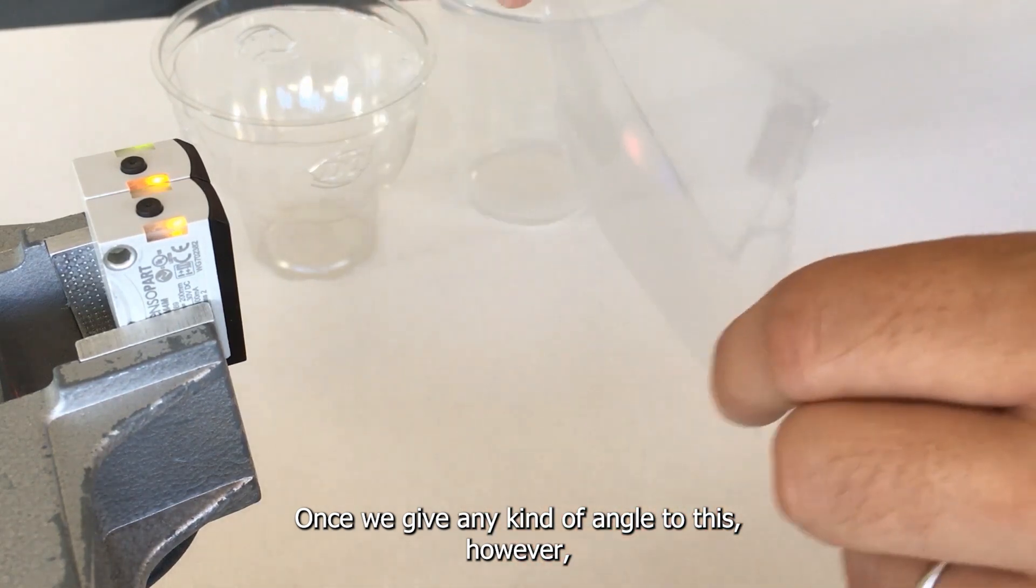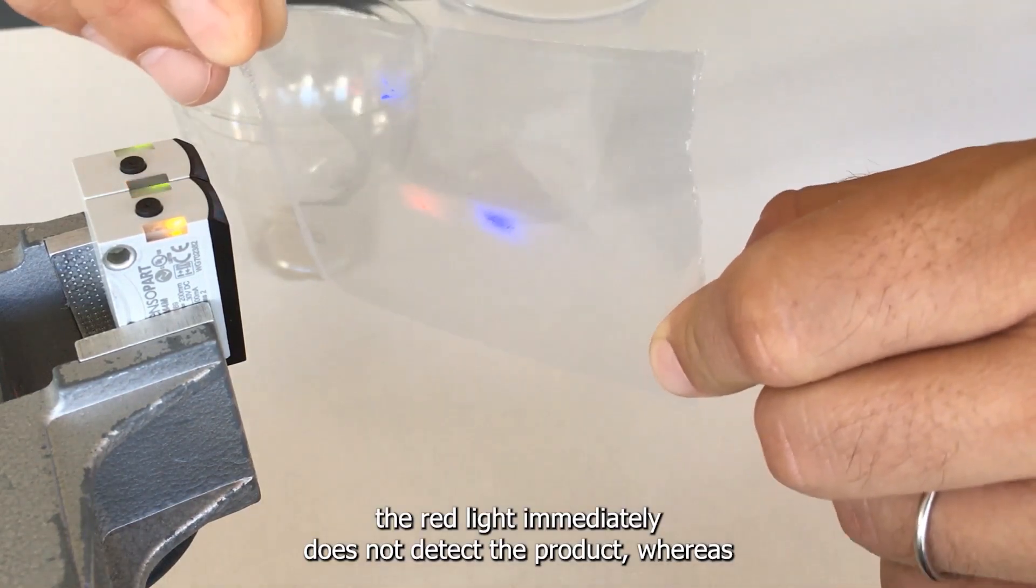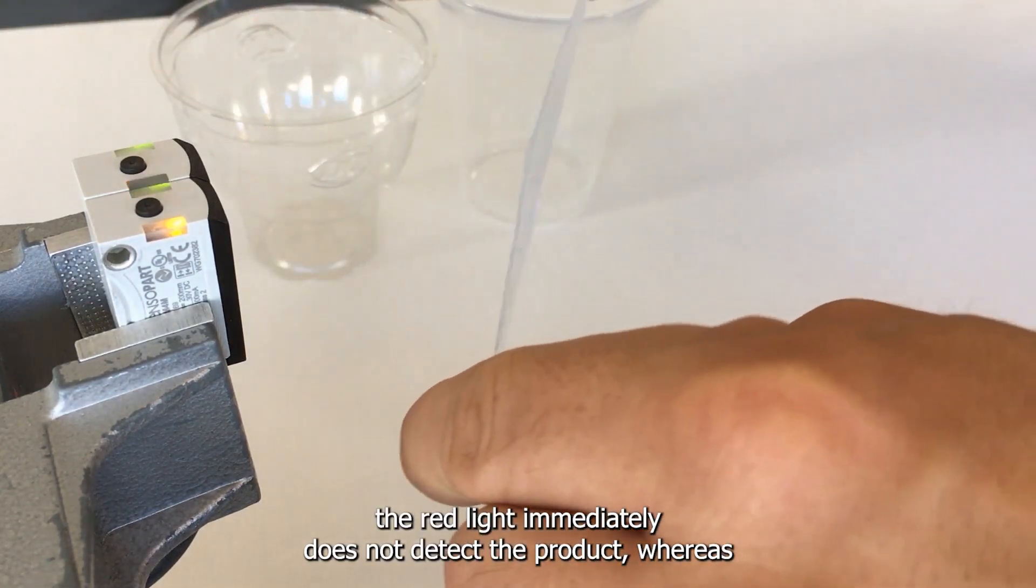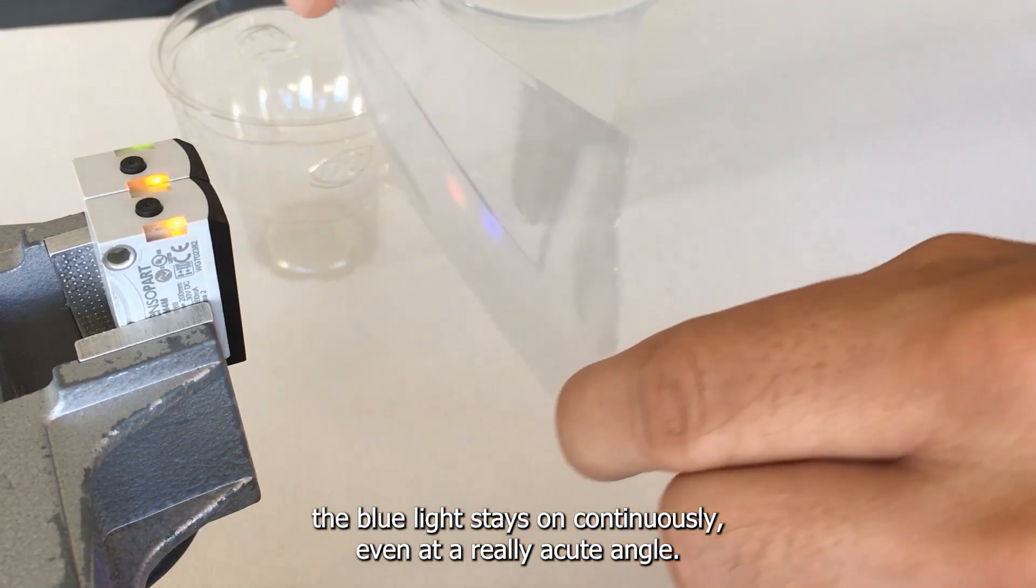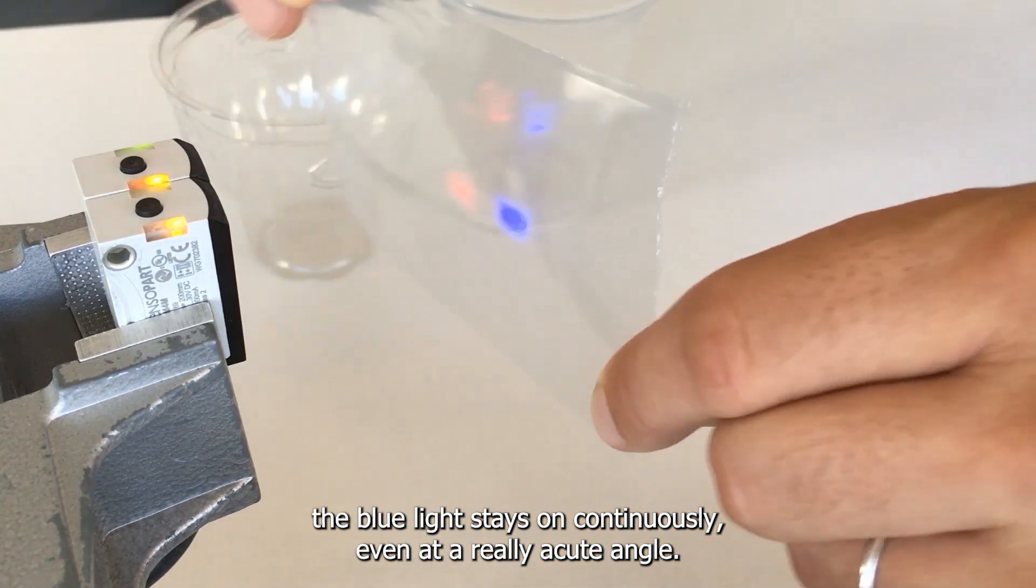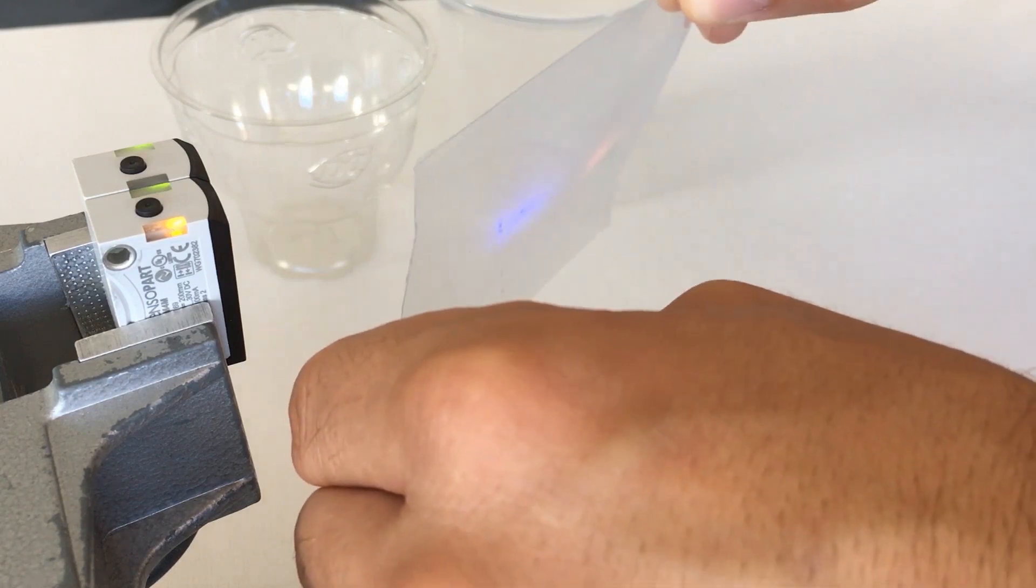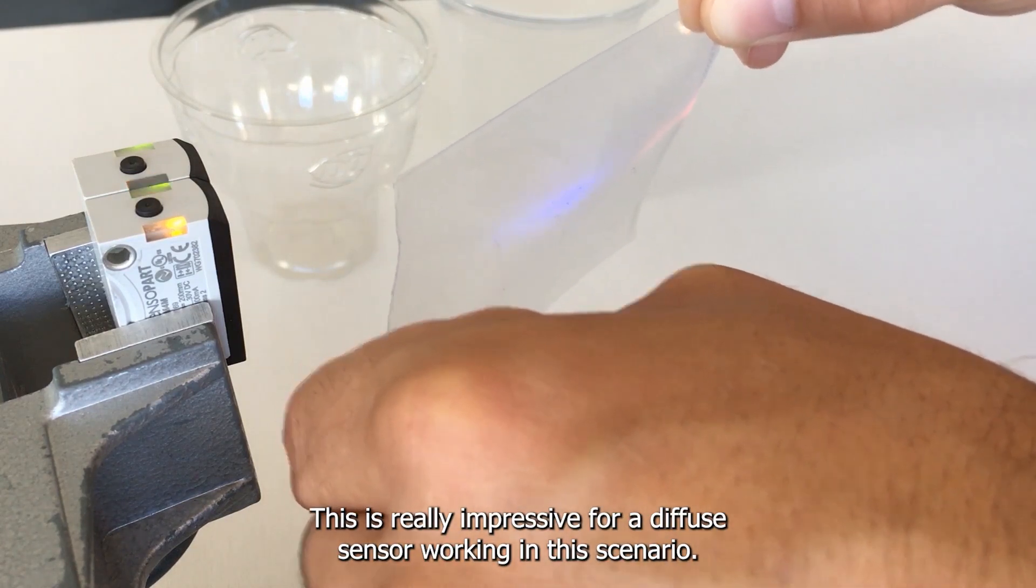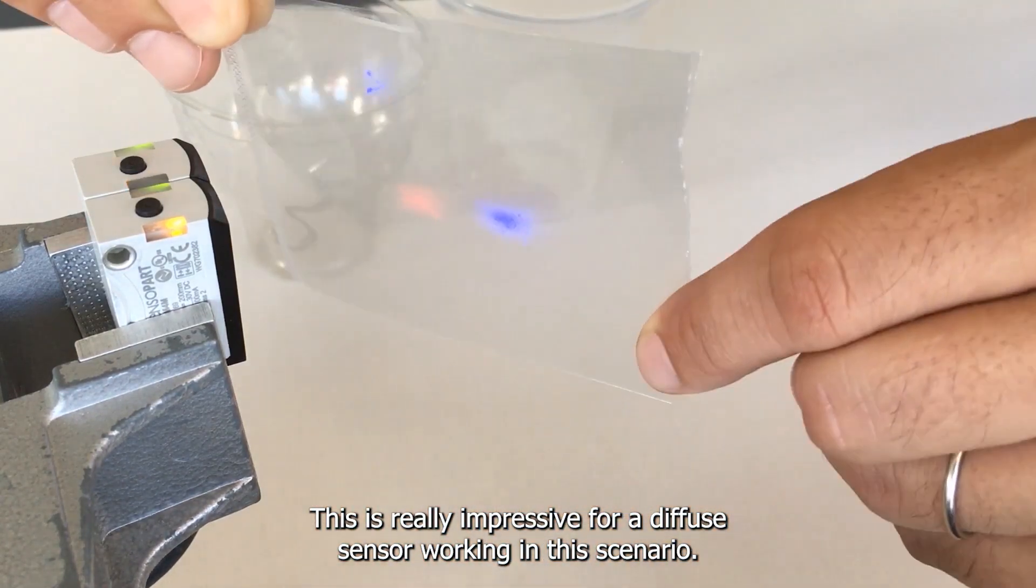Once we give any kind of angle to this however, the red light immediately does not detect the product whereas the blue light stays on continuously even at a really acute angle. This is really impressive for a diffuse sensor working in this scenario.